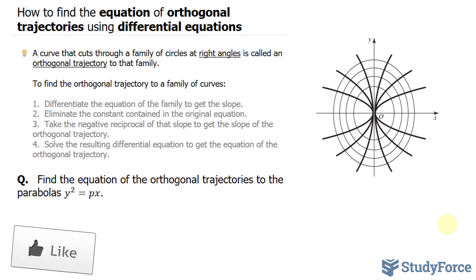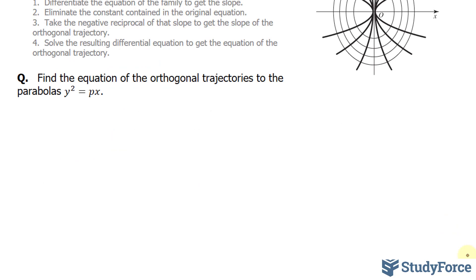And to find the orthogonal trajectory to a family of curves, we follow these steps. So let's start with step one. They say we need to differentiate the equation of the family to get the slope. Let's find the derivative of this equation with respect to x. We have 2y dy/dx, that's the left side, is equal to the derivative of px. Given that p is a constant, we can assume that it's any number. And the derivative of x is 1, leaving us with only p.